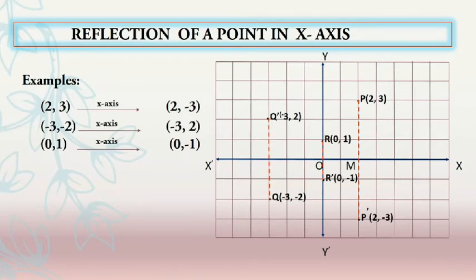The reflection of (-3, -2) in the x-axis is (-3, 2). And the reflection of (0, 1) in the x-axis is (0, -1).